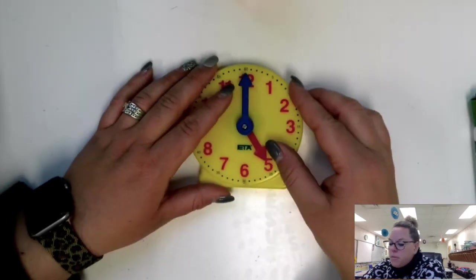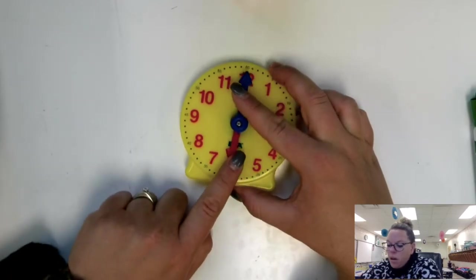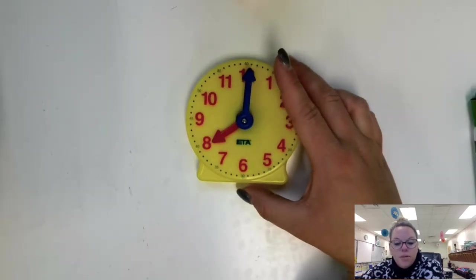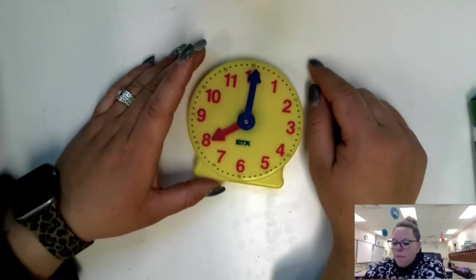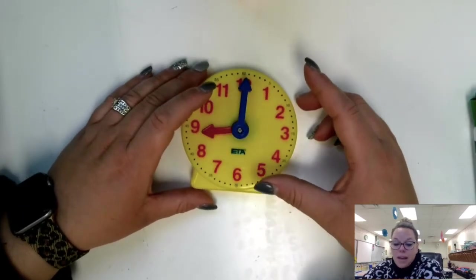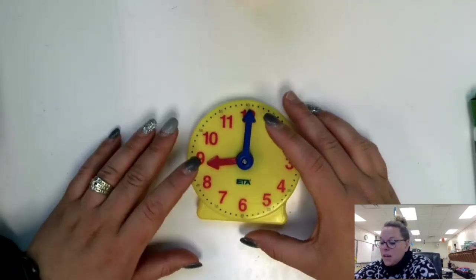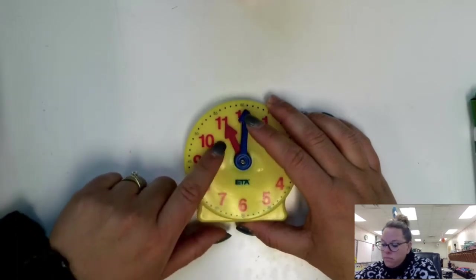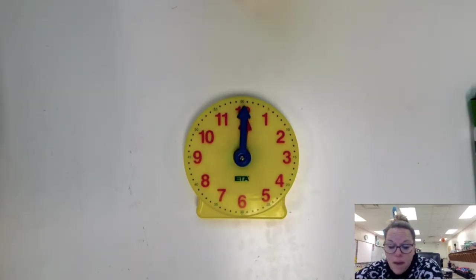How many hours are between 6 a.m. and 8 a.m.? One, two. There are two hours between 6 a.m. and 8 a.m. What about between 9 p.m. and midnight? 9 p.m. and midnight. Let's look. One, two, three. There are three hours between 9 p.m. and 12 o'clock midnight.